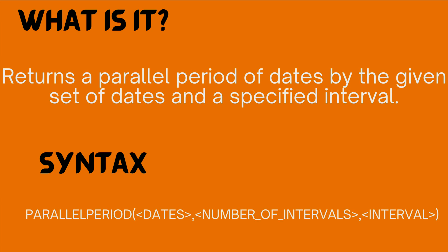First, let's talk about what it is. This DAX function is going to return some parallel period of dates by a given set of dates and a specified interval. Remember that it's going to return you a table. Its syntax is pretty simple — you write the function name PARALLELPERIOD, then you give the dates, the number of intervals (plus one, minus one, etc.), and the interval, which is going to be month, year, or quarter.